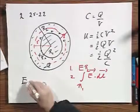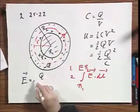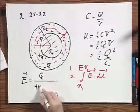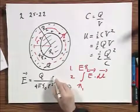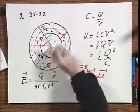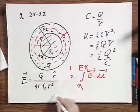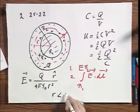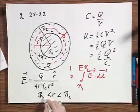And you can prove very easily that vectorially, E equals capital Q divided by 4 pi epsilon 0 R squared times R roof, pointing radially outward, because the inner sphere is positive. And this holds only as long as R is smaller than R2 and larger than R1.